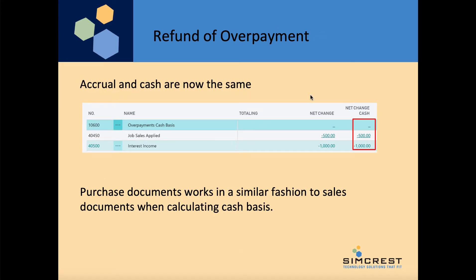Finally we are going to refund the overpayment just to get everything back into balance. Once we have refunded the overpayment of $250, the accrual and cash are now the same.